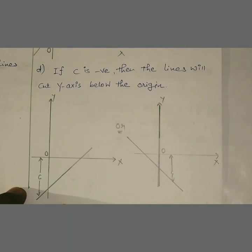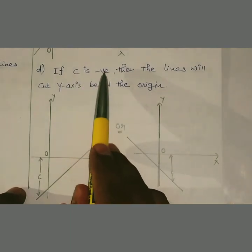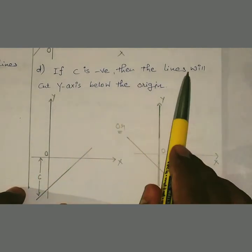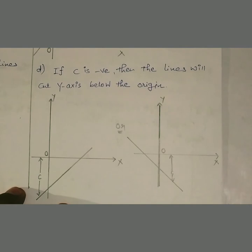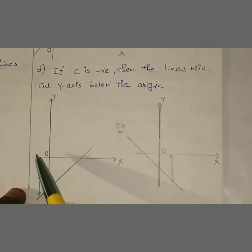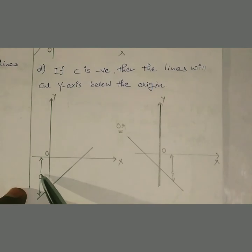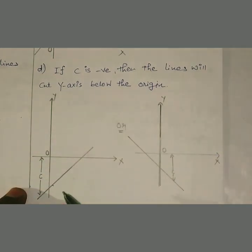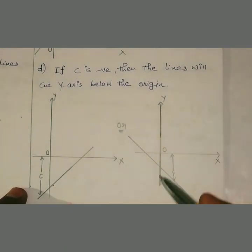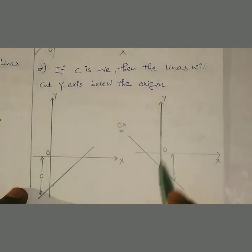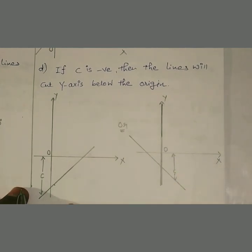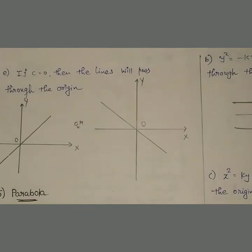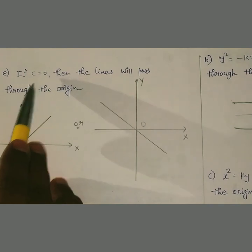Fourth characteristic: if c is negative — intercept is negative — then the lines will cut the y-axis below the origin। अगर c positive है तो above the origin, और अगर negative है तो below the origin। यहाँ पर y-axis है, x-axis है, straight line है — intercept c negative है क्योंकि यह lower side में है और y-axis को नीचे cut कर रहा है।